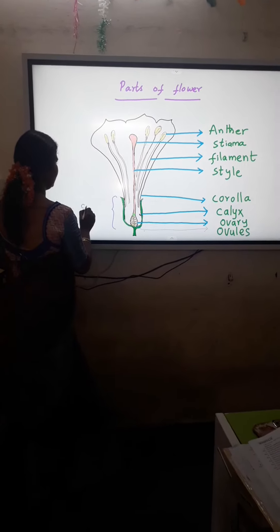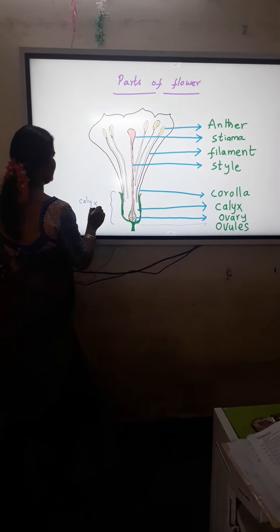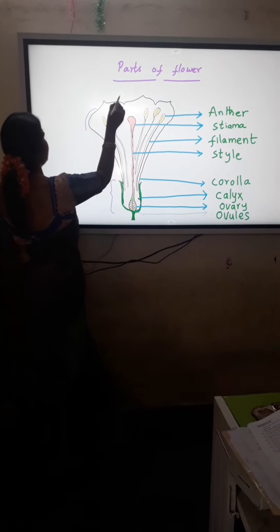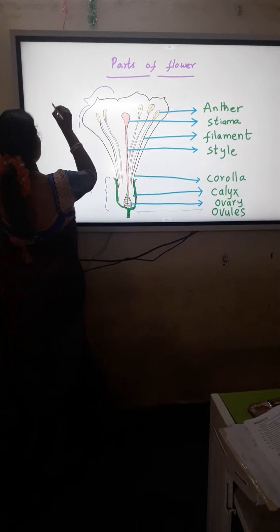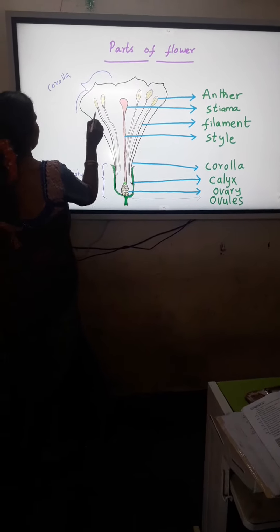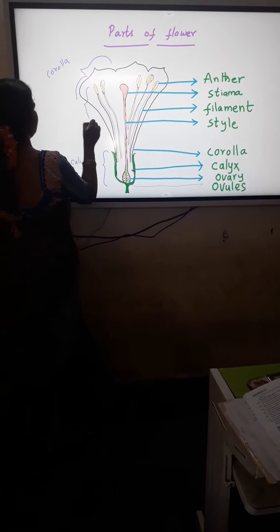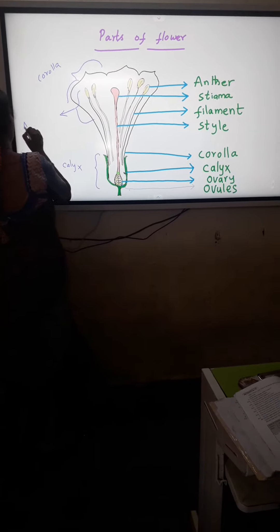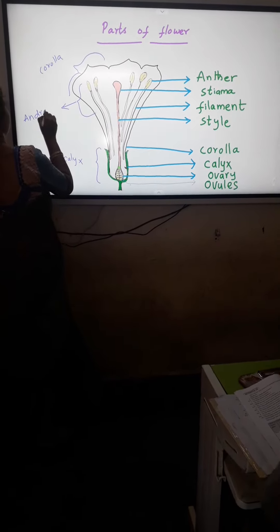Mainly we learned four parts. First one is calyx which is the green color. And second one is corolla, the attractive part of the flower. Third one is androecium, we call it stamen.